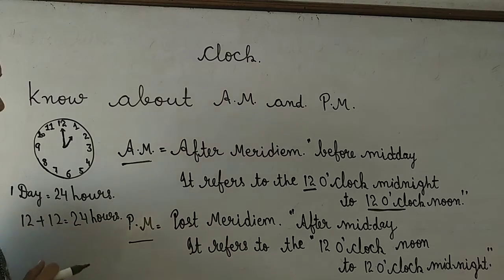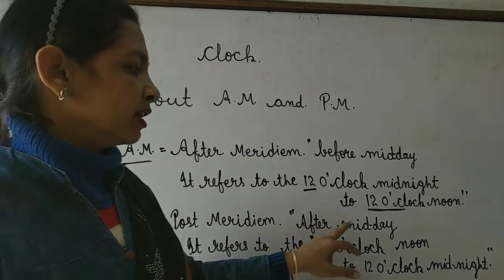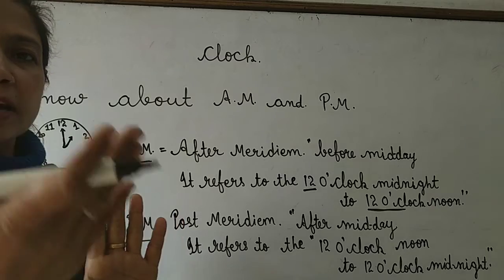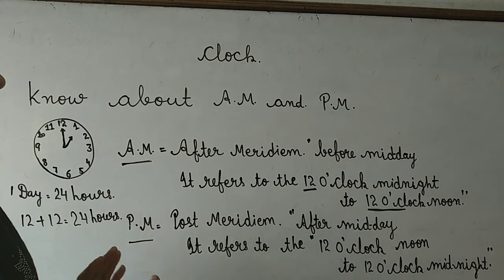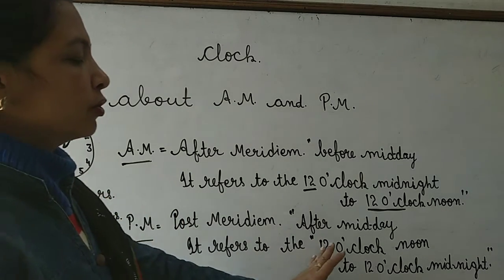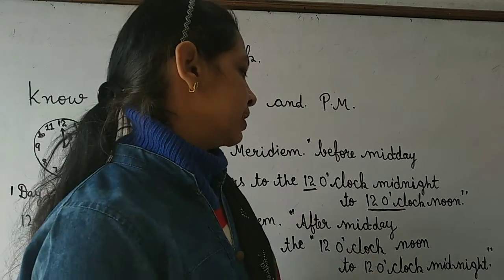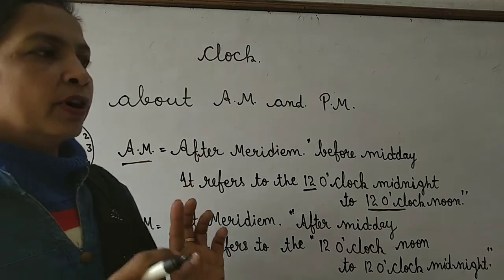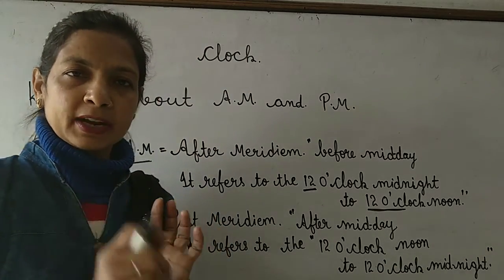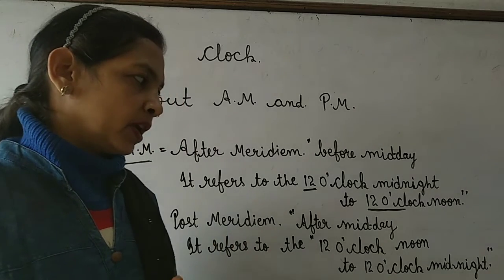P.M. ka kya matlab hai — post meridiem, mnudlag after midday. Dopeher ke 12 o'clock noon ke baad. It refers to 12 o'clock noon to 12 o'clock midnight. Dopeher ke 12 o'clock noon ke baad se 12 o'clock midnight tak ka time P.M. hoga.